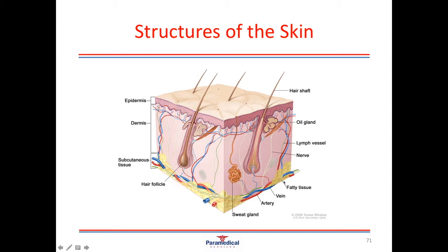The deepest layer of the skin is called subcutaneous tissue, meaning under the skin. The subcutaneous tissue consists of things like fatty tissue or adipose tissue, our blood vessels, and the base of all our nerves. The nerves and blood vessels also extend up into the dermis or dermal layer, and in this layer we also have other major structures like our hair follicles and sebaceous glands or oil glands, which secrete oils onto the surface of our skin to keep it soft and supple.